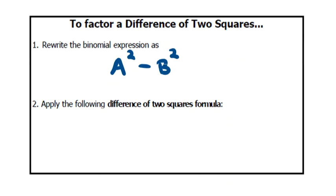Now if you're able to rewrite your binomial expression as that, you can apply a difference of two squares formula in order to factor it. And the difference of two squares formula goes like this.